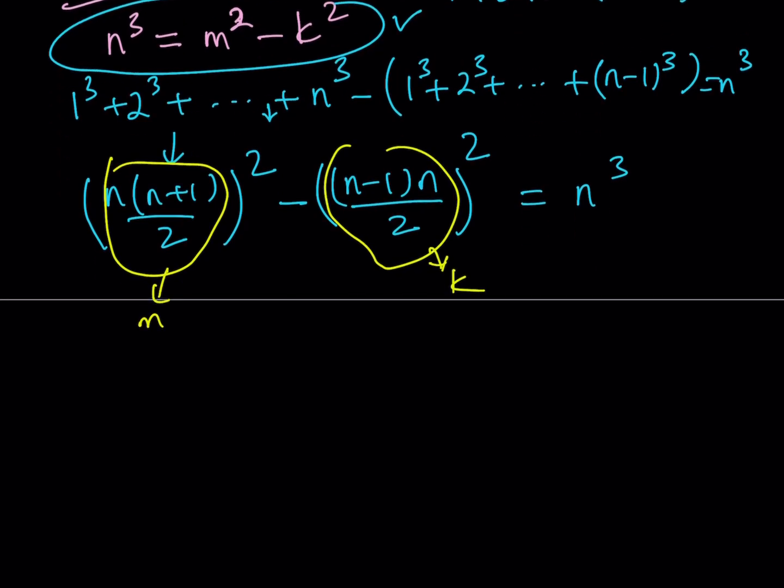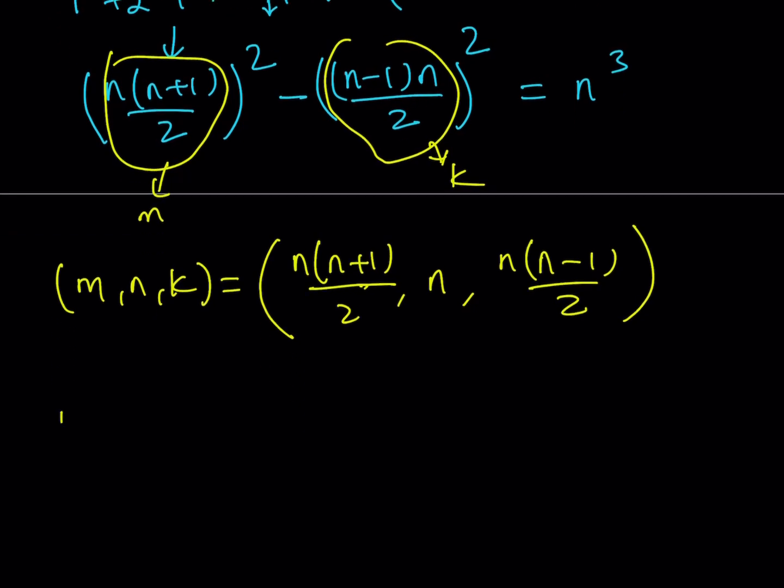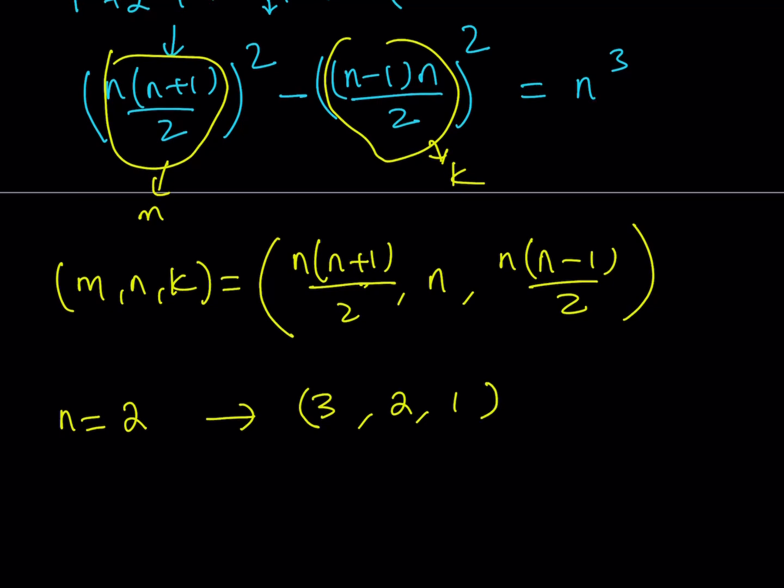So this means that my equation can be written as, remember, this was my difference of two squares. The first one is going to be the m value, and this one is just going to be the k value. Therefore, we found solutions to this equation. If you are looking for solutions like m and k, then they're going to look like the following: m can be written as n times n plus 1 divided by 2, n is just going to be n, and k can be written as n times n minus 1 divided by 2. So let's go ahead and replace n with something so we can see what the solutions look like. For example, suppose n equals 2, since we're looking for positive solutions. Obviously, n needs to be greater than 1. So the minimum value we can use is n equals 2.